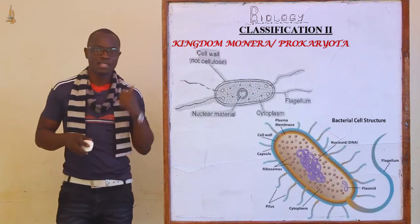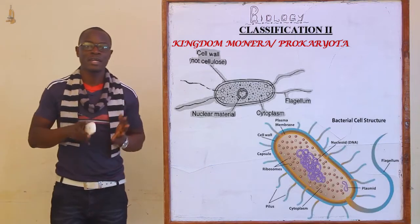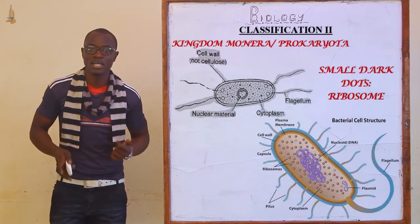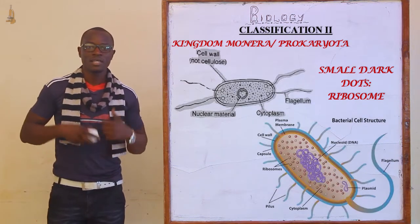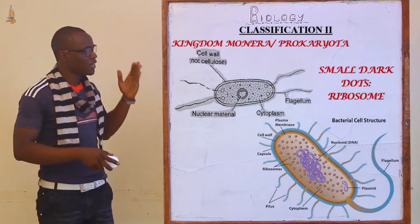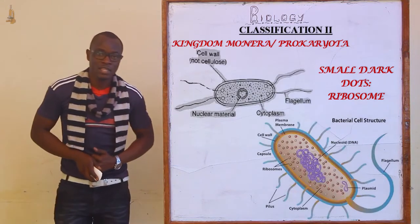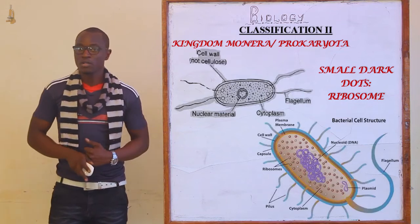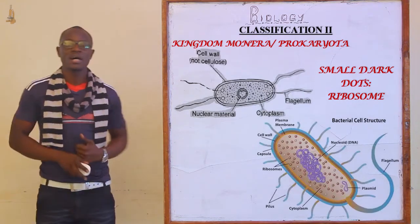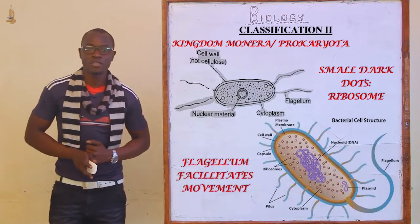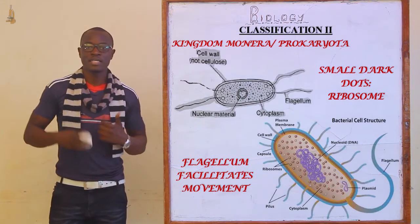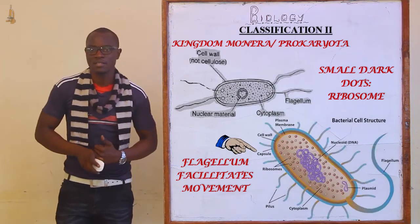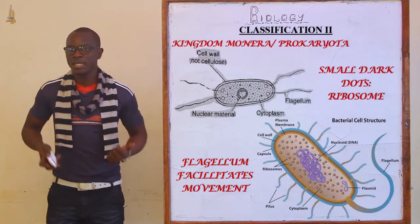Let's now look at the structure of bacteria. The bacteria has a very simple structure. On the diagram we can see the ribosome, whose function is protein synthesis — making proteins for the bacteria. There is the cytoplasm where all organelles float. We can also see a cell membrane, a cell wall, and a flagellum whose function is movement. There is also a plasmid, which is a circular DNA, and finally the capsule over the cell.